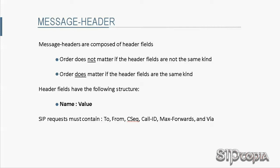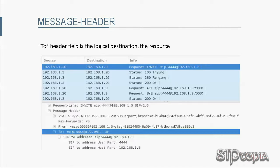Let's go over these and some other SIP header fields using the call between Tarzan and Jane as an example. The To header field is essentially the logical destination of the request — the resource we are trying to reach. Keep in mind that this value might not be the ultimate destination. In this call, Tarzan is trying to reach Jane, but the host portion of the URI is the IP address of the Asterisk Now PBX, which both Tarzan and Jane have registered their SIP phones to.